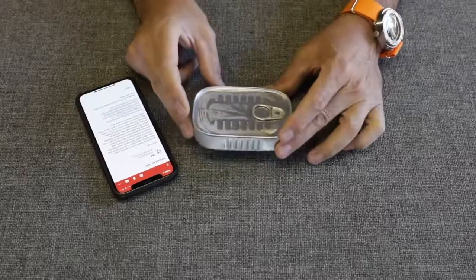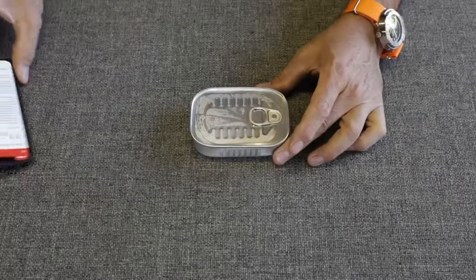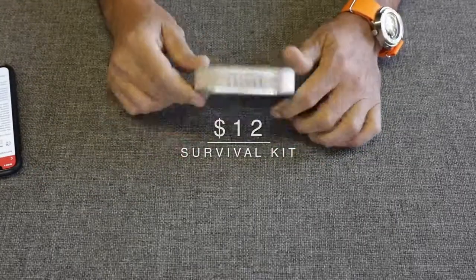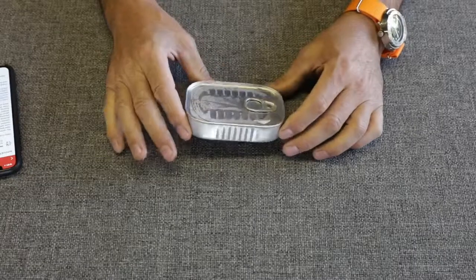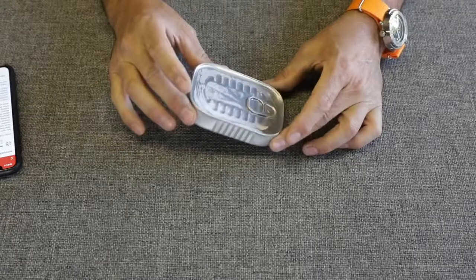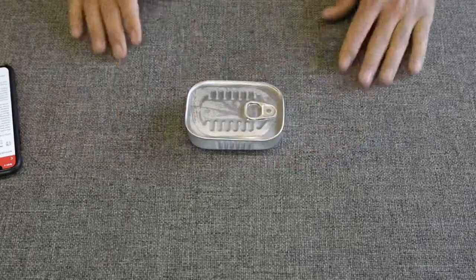Welcome back friends. This is a video that was requested by my subscriber by the name of Elliot. He said that he had come across a tuna can or a sardine can, looks more like a sardine can, survival kit on Amazon and wanted me to do a cheapest survival kit review on Amazon video. So that's what we're going to do today.